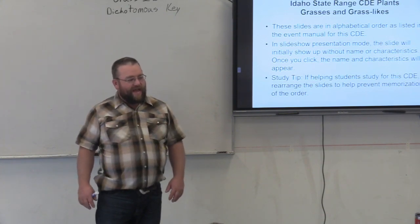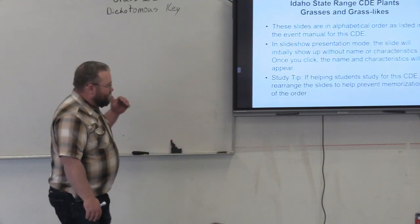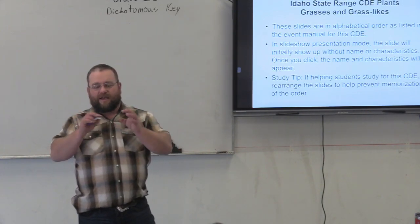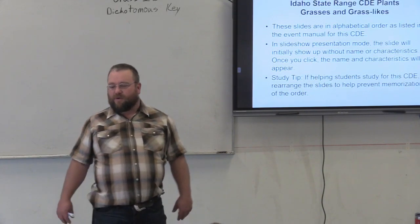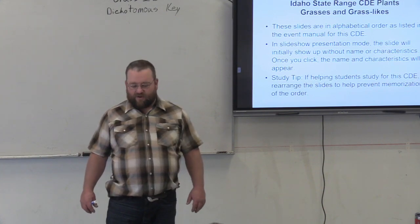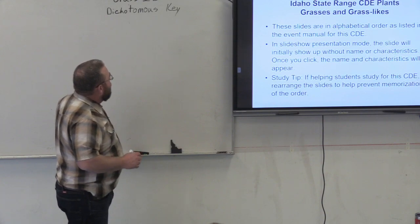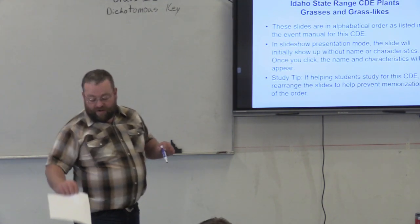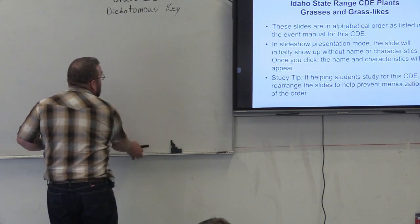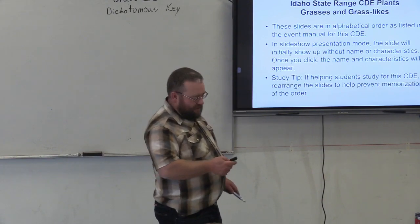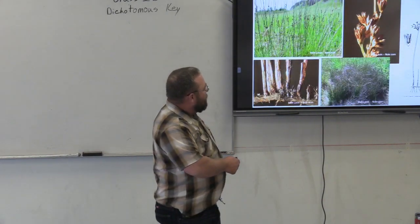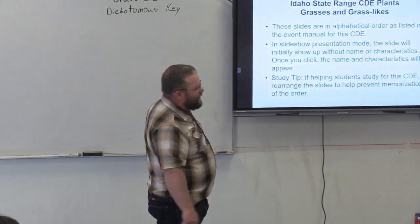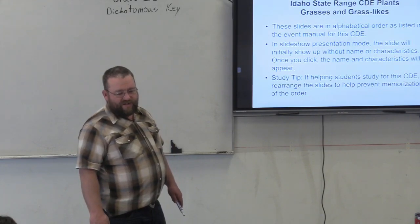We've been covering some range stuff, so we're going to do a dichotomous key. It's fairly self-explanatory. A dichotomous key just takes certain factors and organisms and gives us an opportunity to identify and split them up and group them as we ask certain questions. This PowerPoint right here is on the Idaho State range site.